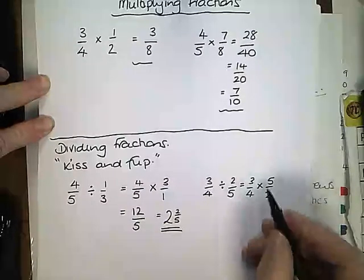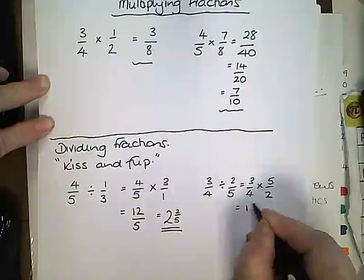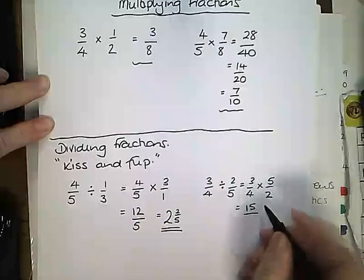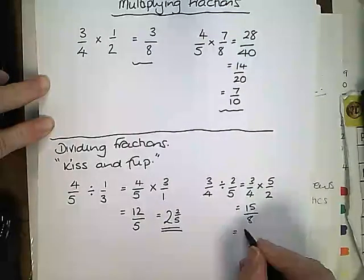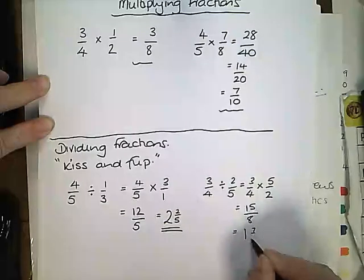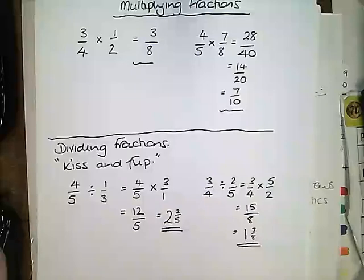Then we proceed to multiply the fractions. 3 times 5 is 15, 4 times 2 is 8. Change it into a mixed number. 8ths into 15 is 1 with 7 left over, so 1 and 7 eighths. OK, thanks for watching.